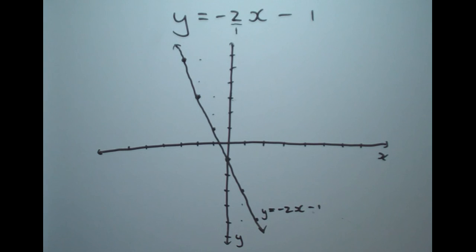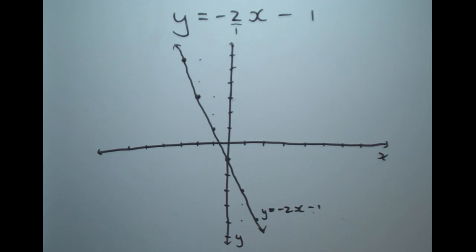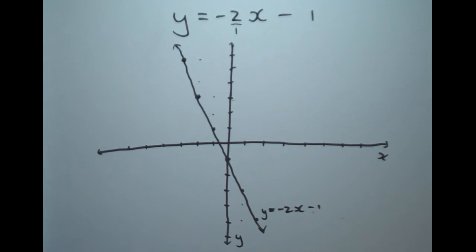I hope you now understand how to use both the rise over run method and the table method to draw straight line graphs. The rise over run method is a lot quicker, so if you're not told which one to use, you should use the rise over run method to save time. If there are any other topics you'd like me to cover, please leave your suggestion in the comments below. Happy studying!